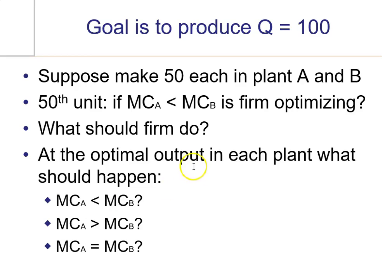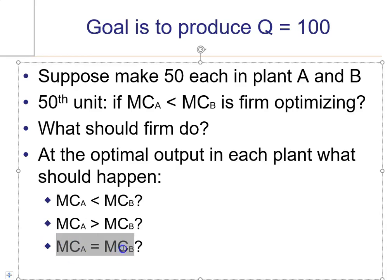So what should happen then at the optimal? At the optimal, if both plants are open, it better be the case that the marginal cost in plant A exactly equals the marginal cost in plant B. That's your optimal scenario where you've equated these marginal costs.